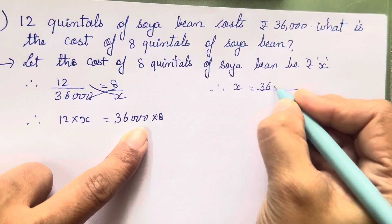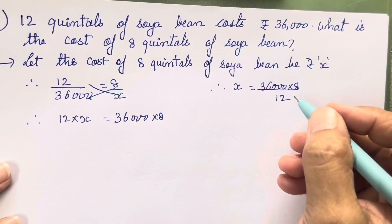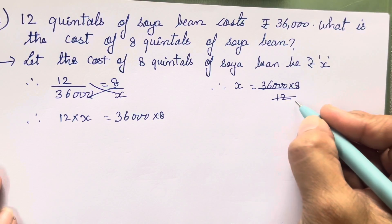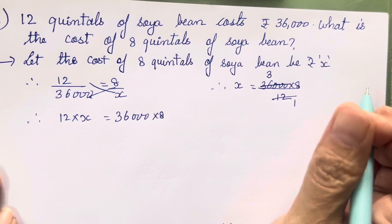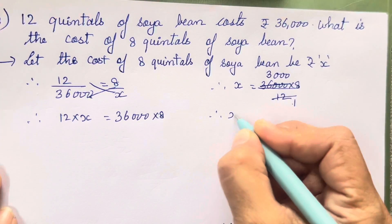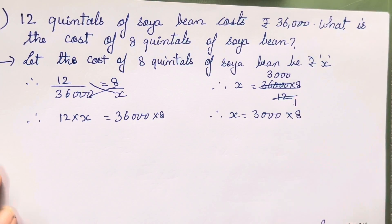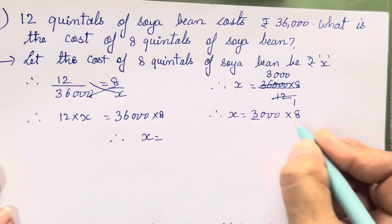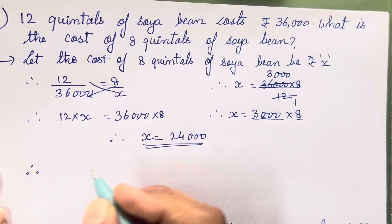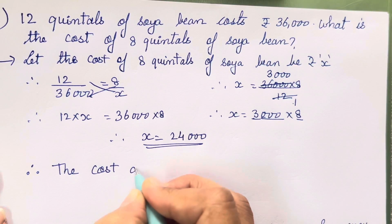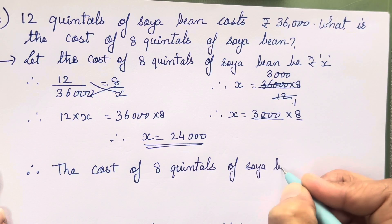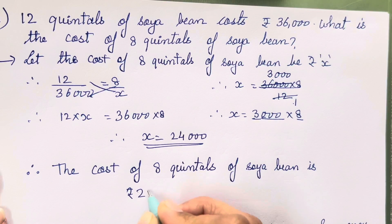So x we will keep here and 12 we will carry forward as division. Using the 12 times table: 12 ones are 12, 12 threes are 36 — three zeros as it is. What is left: x is equal to 3000 into 8. Then 3 eights are 24 and three zeros after that — so x equals 24,000. The cost of 8 quintals of soya bean is rupees 24,000.